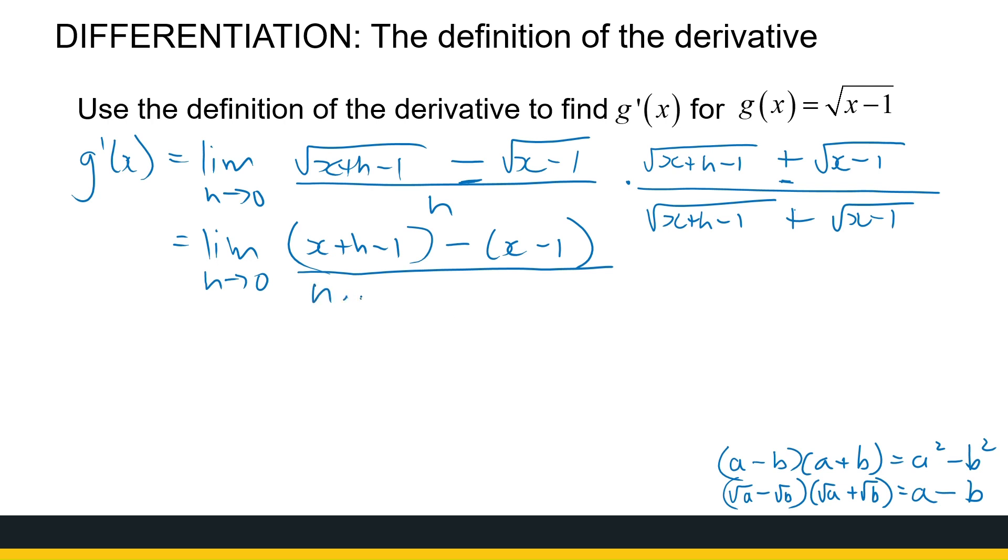So h times, put it in brackets, the root of x plus h minus 1 plus the root of x minus 1. Okay, so now my denominator is ugly. But you'll see soon that that doesn't matter because things are going to get pretty soon. That's the limit as h approaches 0.